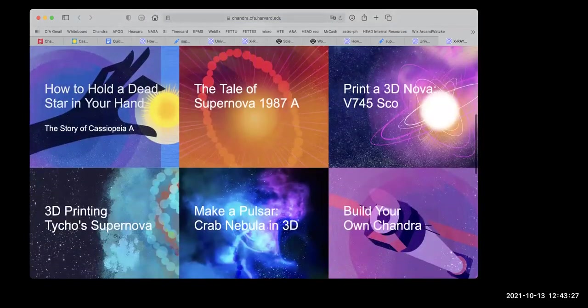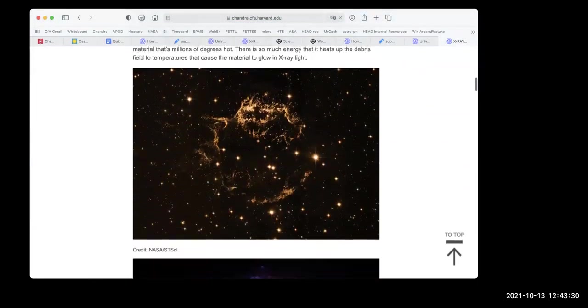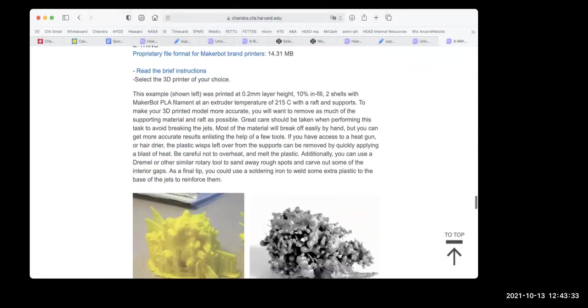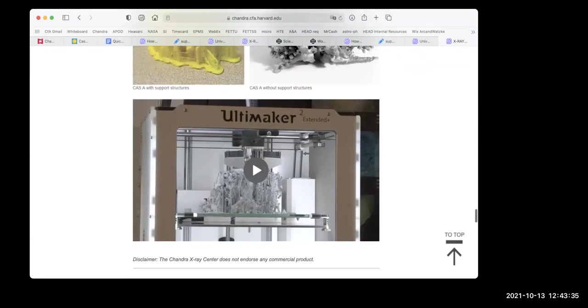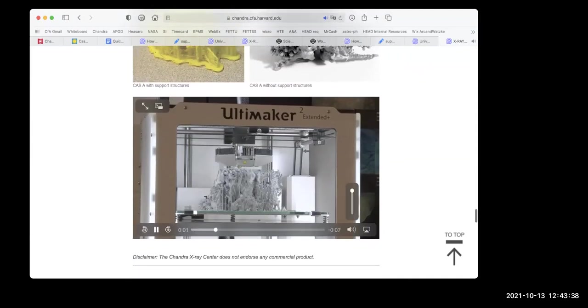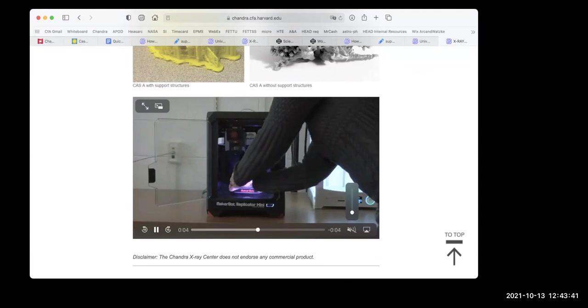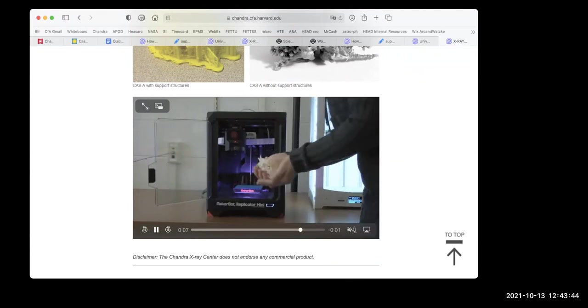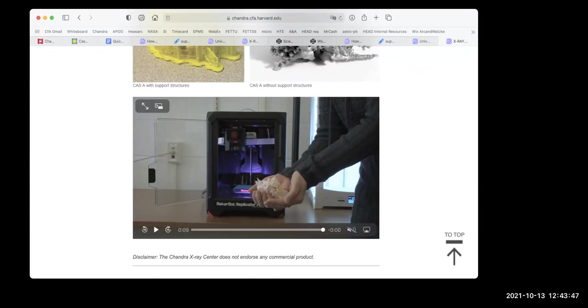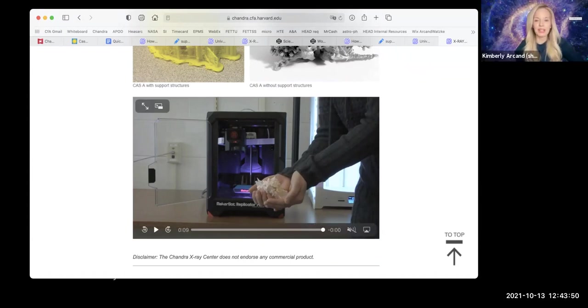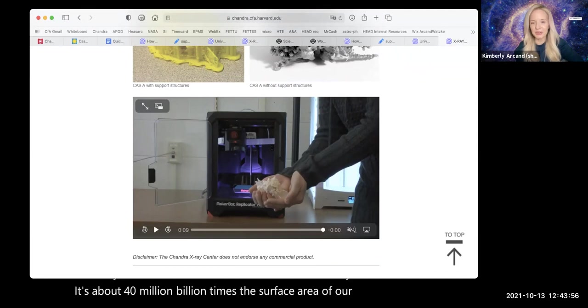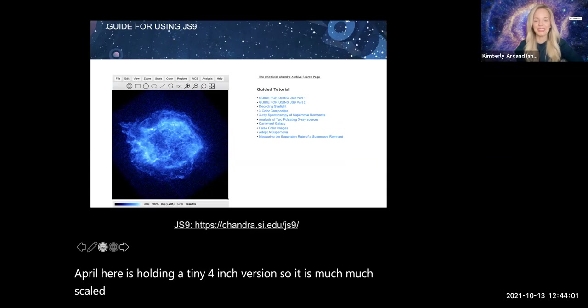And then there's also a newer activity called binary beats where you can create music based on binary code. So the next one we have is called recoloring the universe. And this is a computer-based activity. There are follow along videos. So you'll learn basic coding skills using actual Chandra data on exploded stars and star forming regions and black holes. And next we have 3D printing with Tinkercad. I'm sure a lot of you have used Tinkercad. We have our own special activity series that takes you through the basics of 3D modeling and astronomy.